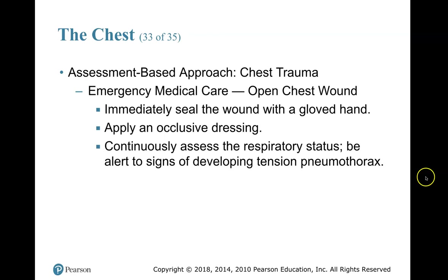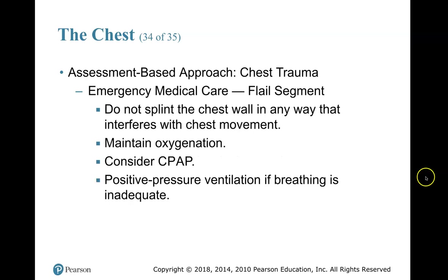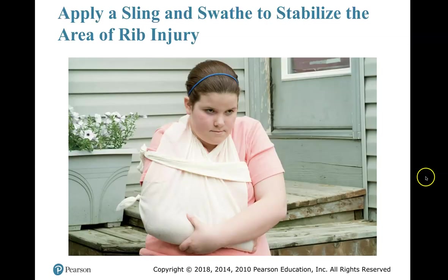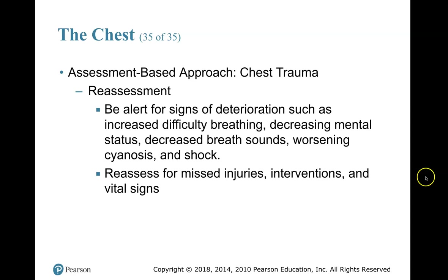Emergency medical care for an open chest wound: immediately seal the wound with a gloved hand, clean off the chest area, and apply an occlusive dressing. Continuously assess the respiratory status and be alert to signs of developing tension pneumothorax. For a flail segment: do not splint the chest wall in any way that interferes with chest movement, maintain oxygenation, and consider CPAP or positive pressure ventilation if breathing is inadequate.